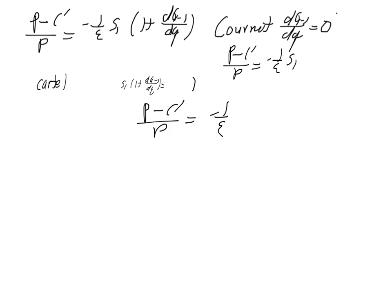If the rival response always just offsets the firm's shift in output, so that dQ minus 1, dq is equal to negative 1, then the price cost margin will be equal to 0, and p equals mc. We mimic the competitive result, we mimic perfect competition.